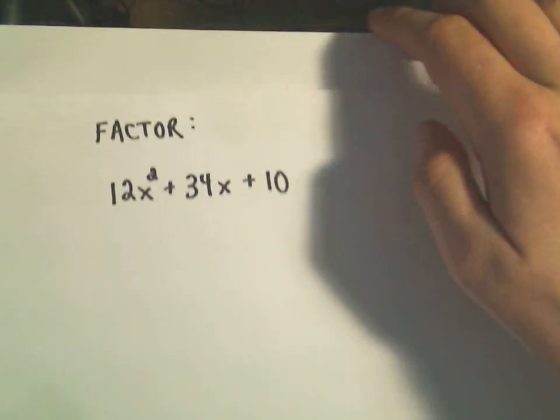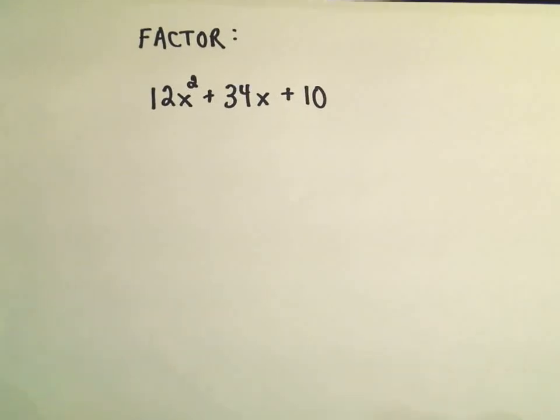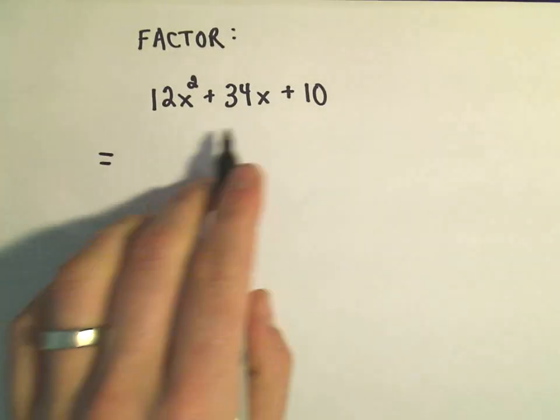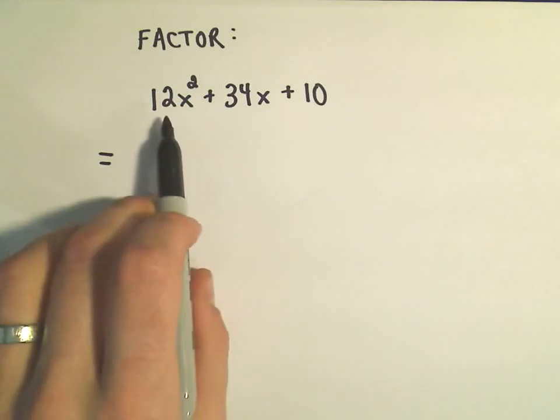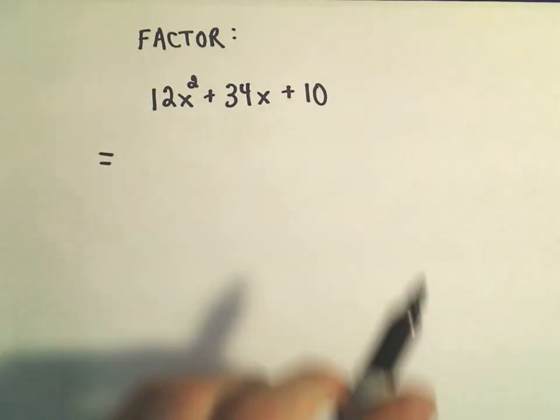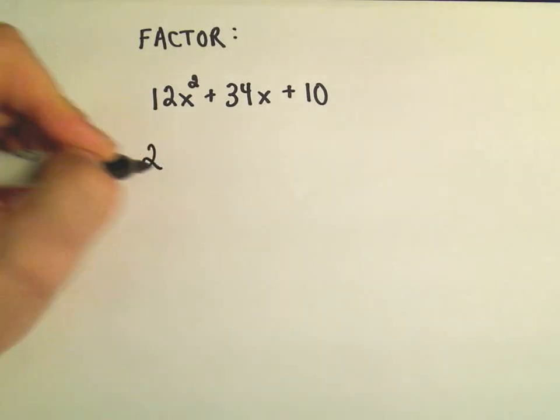So we'll have to do one thing first, and this is, again, something very common. Whenever I go about trying to factor anything, the first thing I always try to do is factor out the greatest common factor. And in this case, it doesn't look like we can factor out the variable x, but if you look at the 12, the 34, and the 10, we can factor out the greatest common factor of those numbers. And I believe the greatest common factor of 12, 34, and 10 would be 2.